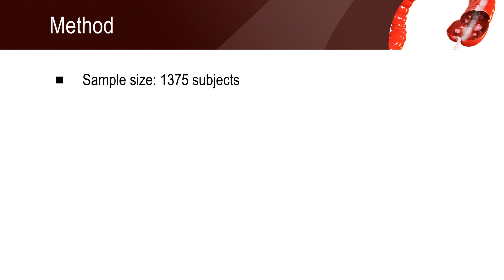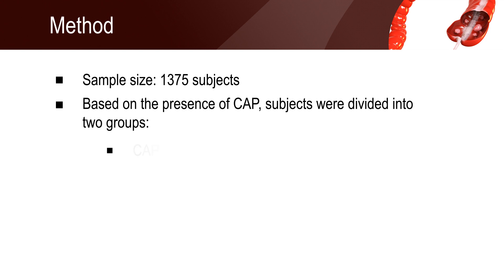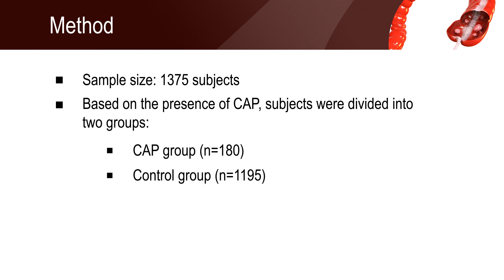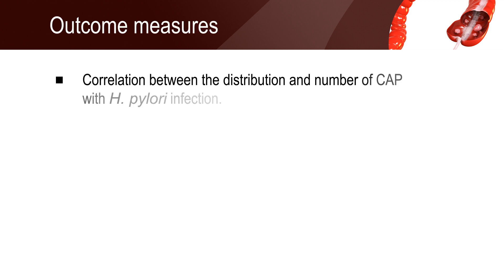The study included 1,375 subjects. Based on the presence of colorectal adenomatous polyps, subjects were divided into two groups. The colorectal adenomatous polyps group included 180 patients, and the control group included 1,195 patients. The correlation between the distribution and number of colorectal adenomatous polyps with H. pylori infection was established.